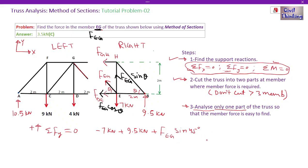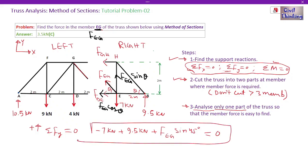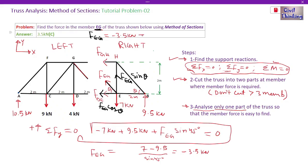Rearranging: FEG = (7 − 9.5) ÷ sin45° = −3.5 ÷ sin45° ≈ −3.5 kN. The negative sign means the force is compressive, not tensile. Therefore, FEG = 3.5 kN in Compression (C).